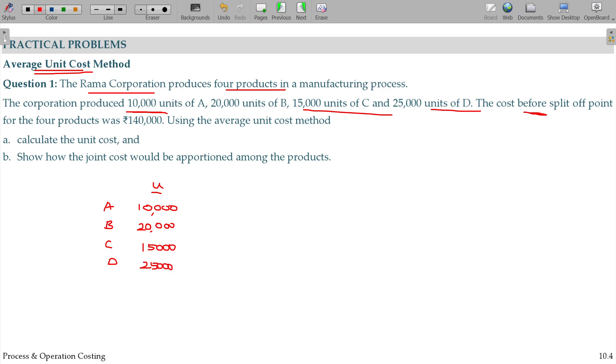The cost before split-off point for the four products was 1,040,000 rupees. Using the average cost method, calculate the unit cost. Total units are 70,000. We assume 1,040,000 rupees is spent for producing 70,000 units.